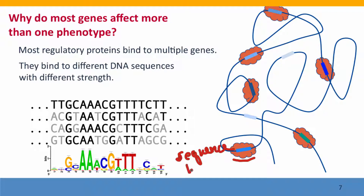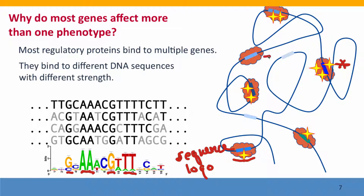A sequence logo is a diagram showing how the regulatory protein responds to differences in sequence. Here we see that it cares a lot about having a G, then it needs to have two A's. It's important to have a G here and two T's here. These other positions are helpful, and some positions it really doesn't care about. The consequence is that these different genes that the protein regulates will be activated to different extents — perhaps very strongly here, and maybe hardly at all here.